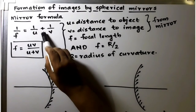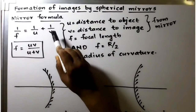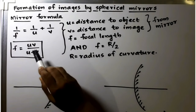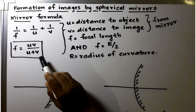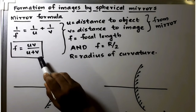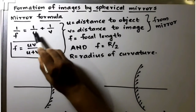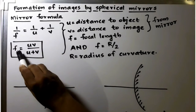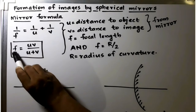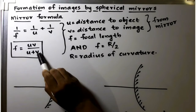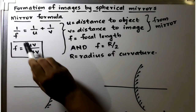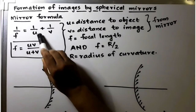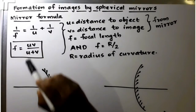The same formula can also be written as f is equal to uv by u plus v. We are doing cross multiplication and then taking reciprocals. So f = uv/(u+v) is the same as the mirror formula 1/f = 1/u + 1/v.